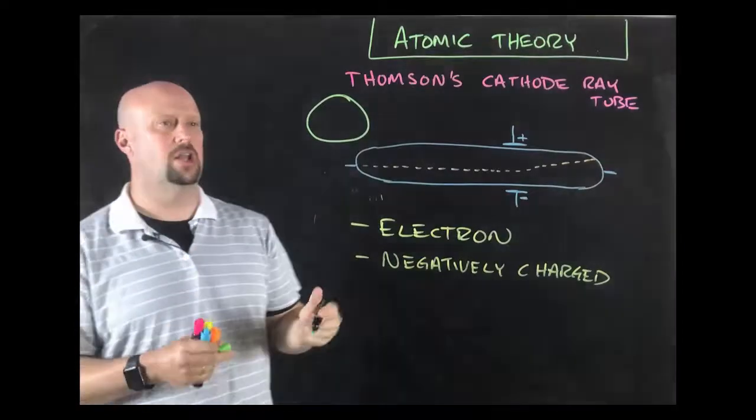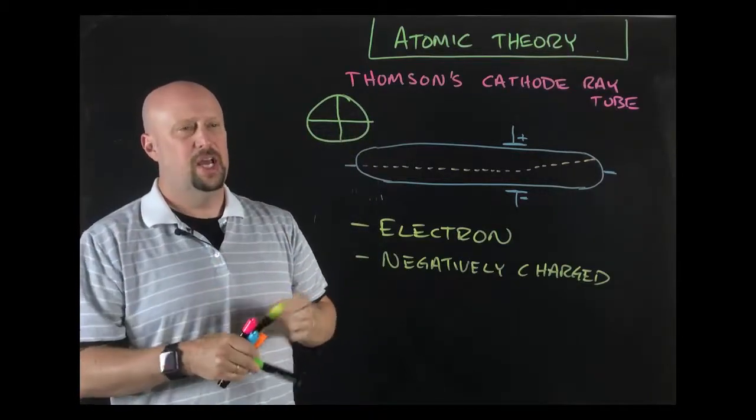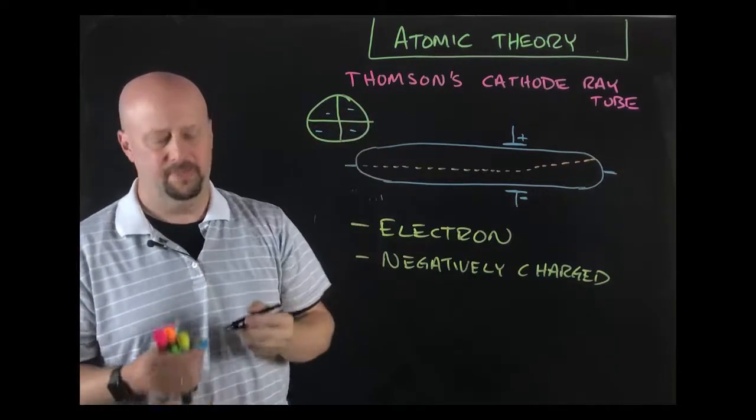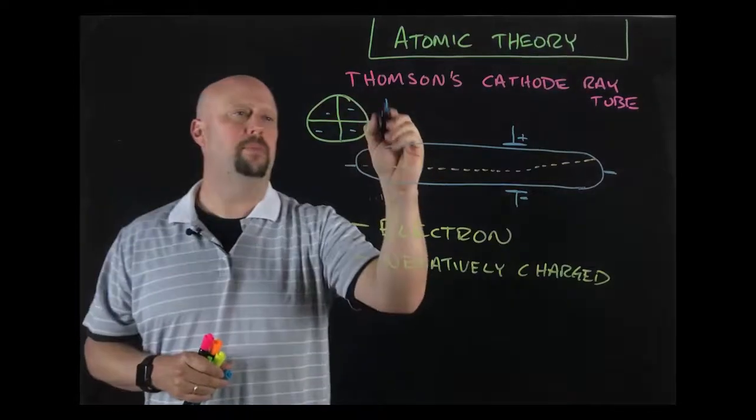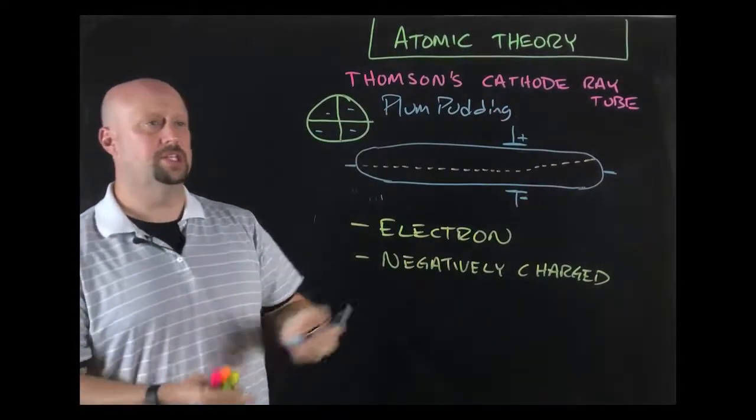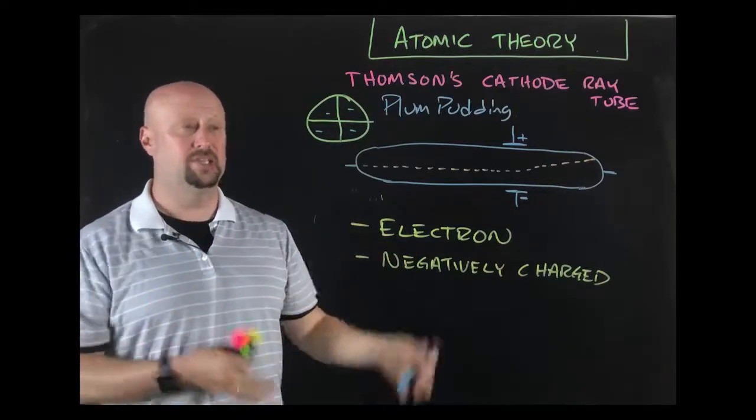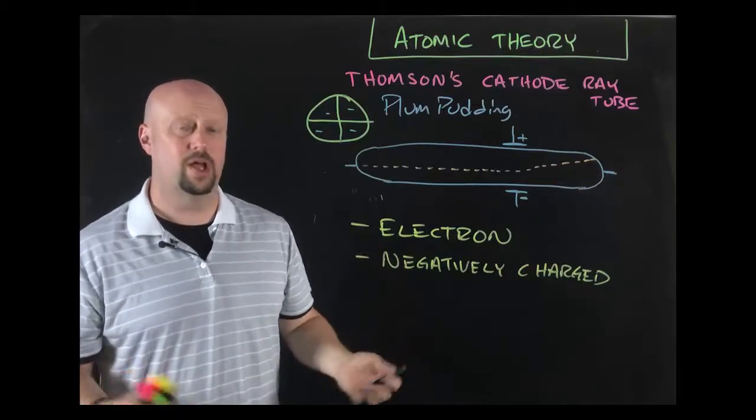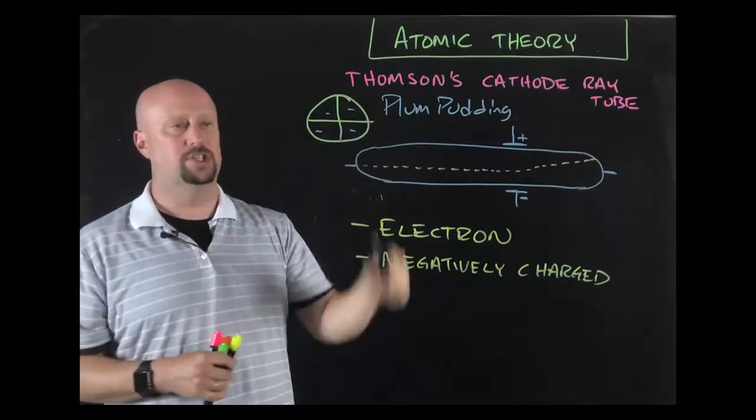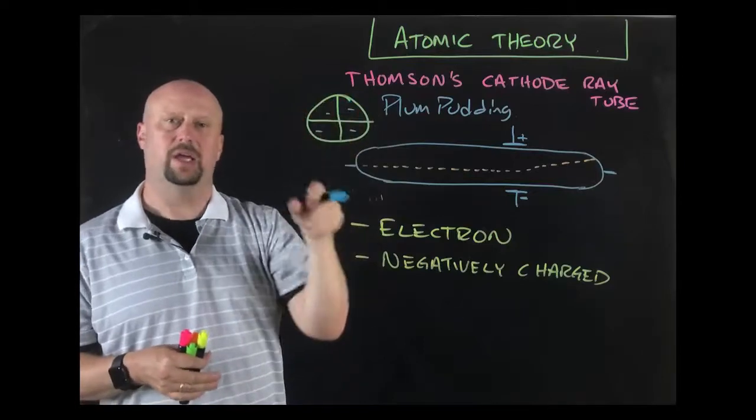What Thompson proposes is what comes to be called the plum pudding model. The plum pudding model works like this: instead of being a billiard ball, a solid mass, Thompson proposed that most of the atom was just this big block of positive charge, and then there were these negatively charged electrons embedded in it. It gets called the plum pudding model because essentially it was like an English pudding with pieces of plum in it.